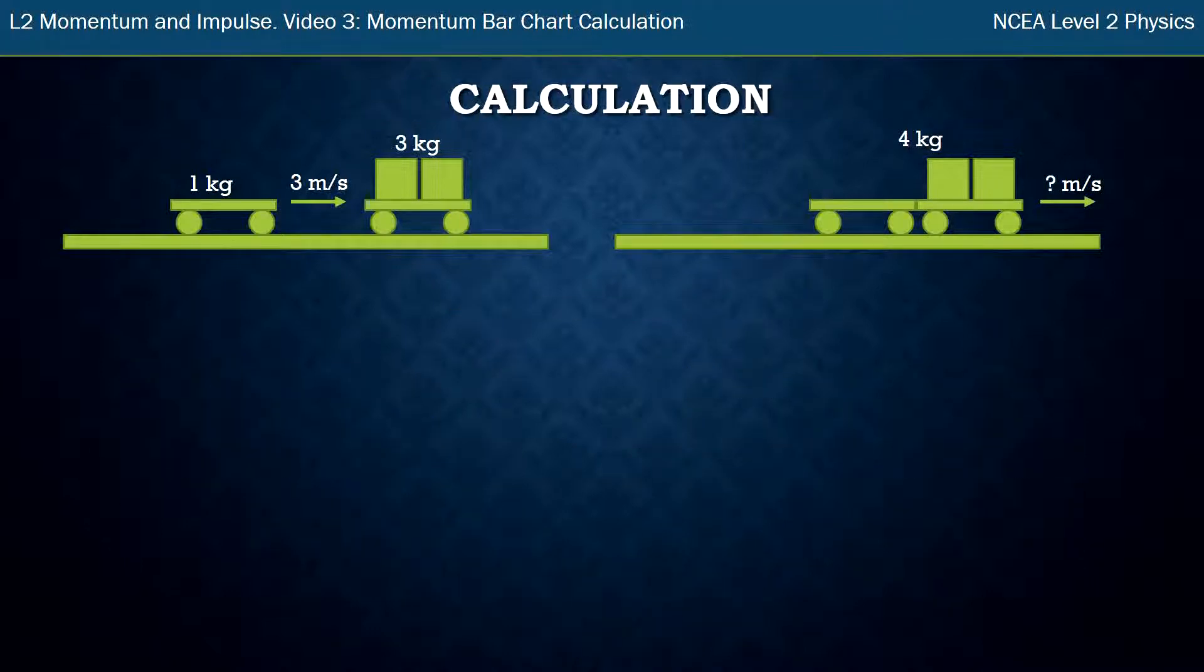Now I'm going to add in a calculation. The calculation I want to do is to find the velocity of the combined carriages, which I don't yet know and there's a question mark in the diagram there. To do that of course we need to know that momentum, which is symbol P, is equal to mass times velocity.